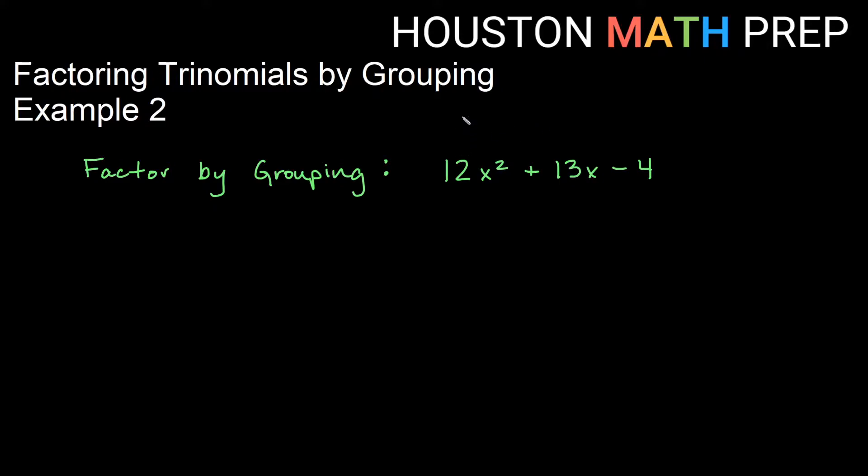So remember with the factoring by grouping, if you watched our example one video, we go through and we label the coefficients a, b, and c. And the idea with the grouping is that we will turn our middle term into two separate like terms that add up to 13x still. So remember we look at a times c and we compare it to b.